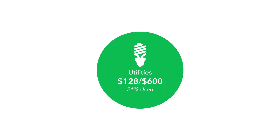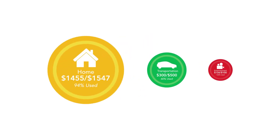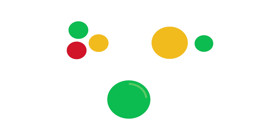You can also track your budgets with the progress meter around the outside of each bubble. The size of the bubble indicates the size of the budget. These visuals help pinpoint areas of your budget that need the most attention.